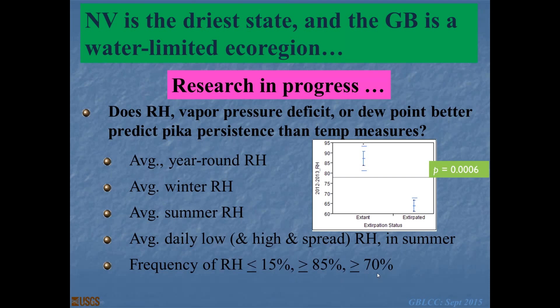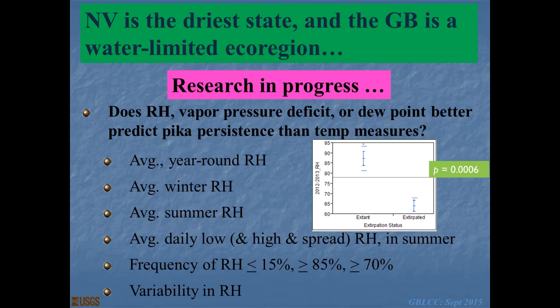Working with Thomas Millett and Aaron Johnston, we flew over 10 of these sites with several cameras on the belly of the plane, achieving imagery at two to four centimeters resolution. We have data in true color, color infrared, and thermal infrared — at absolute temperature, not relative. Our goal is to calibrate temperatures sensed from the plane with the temperatures down in the talus, where sensors were recording temperature every 30 seconds when the plane flew over, to create a very fine-resolution model of where pikas would be found in new, never-surveyed areas — essentially giving us a predictive tool.